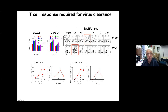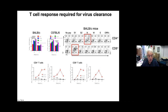Looking at T cell responses, if you deplete CD4, CD8, or both, virus clearance is delayed, though it eventually catches up — showing T cell responses are required for virus clearance. For CD4 T cells, the predominant target is the nucleocapsid protein. For CD8 T cell responses in BALB/C mice, it's mostly directed at the S1 segment of the S protein. Both CD4 and CD8 T cells peak at about day eight and then come down, consistent with natural infection.